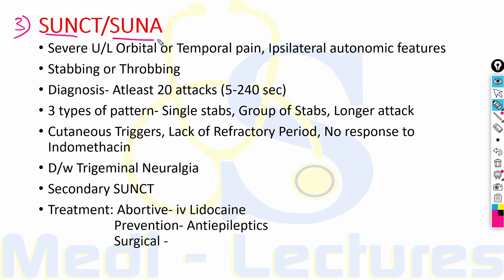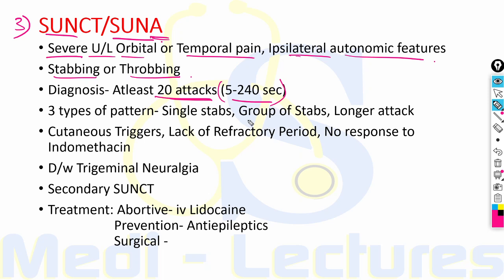The third type of TACs is SUNCT and SUNA — short-lasting unilateral neuralgiform headache with conjunctival tearing or cranial autonomic symptoms. Patients present with severe unilateral orbital or temporal pain with associated ipsilateral autonomic features like lacrimation and conjunctival injection. It is stabbing or throbbing in nature. Diagnosis requires at least 20 attacks lasting 5 to 240 seconds. There are three patterns: single stabs, group of stabs, or longer attacks. In longer attacks, there are many stabs between which pain does not completely resolve, giving a saw-tooth appearance, with attacks lasting many minutes.